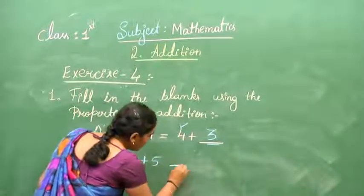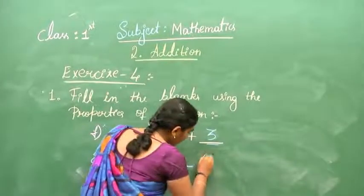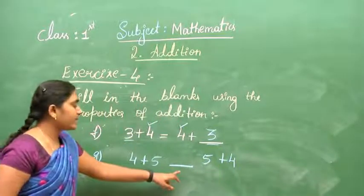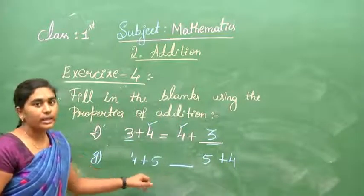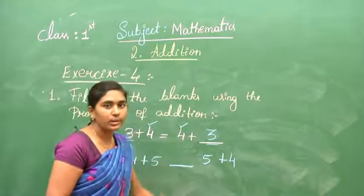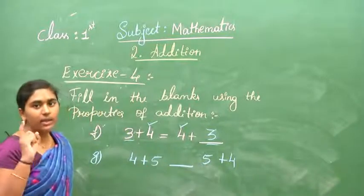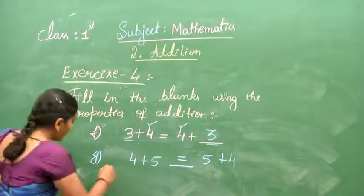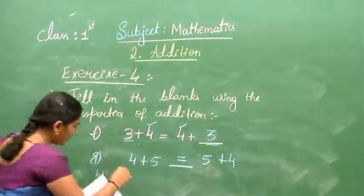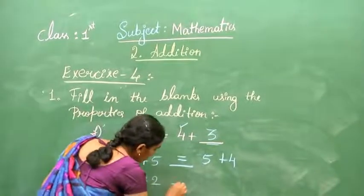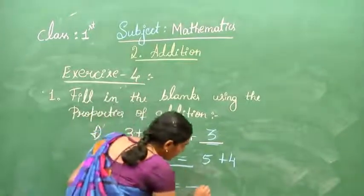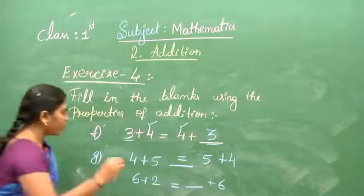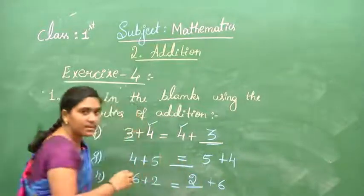Next: 4 plus 5 blank 5 plus 4. What do we write in the blank? Even though we change the numbers, the answer will be equal — so we write the equals symbol there. And for 6 plus 2 equals blank plus 6, the answer is 2.